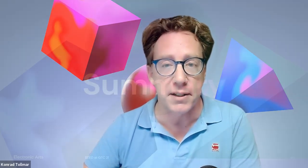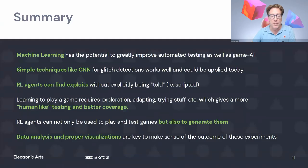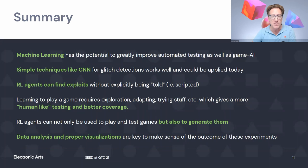That brings us toward the end of our presentation. To summarize: AI and ML are well suited for game testing. Simple techniques like convolutional neural networks are useful for detection of glitches. More powerful techniques like reinforcement learning can operate agents for game testing, and the unpredictability of AI can become a strength rather than a weakness. We need to develop more human-like behaviors like curiosity, we are working on using RL in more dynamic environments, and we need new ways to visualize gameplay so game designers and developers can understand and use these tools.